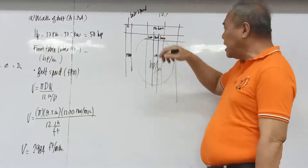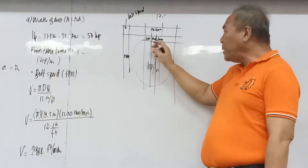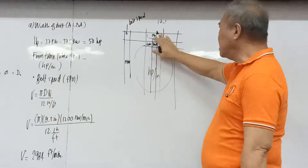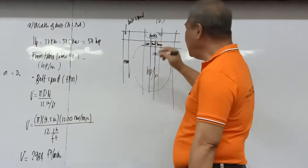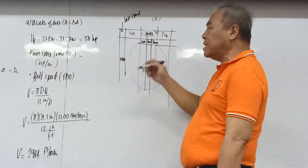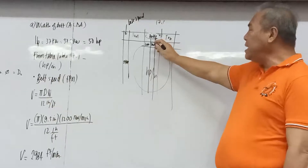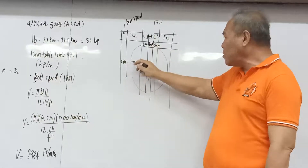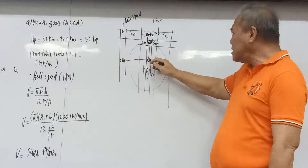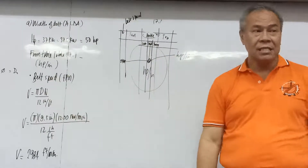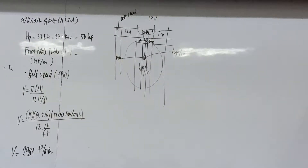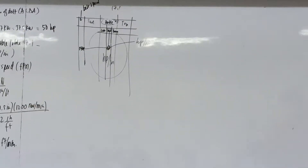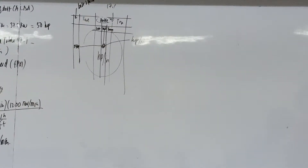The problem states we are using a generator driven by a diesel engine. Going to Table 17.2 for C_M: since diesel engine is not an electric motor, the corresponding entry is 'any except electric motor,' and the correction factor C_M equals 1.0.